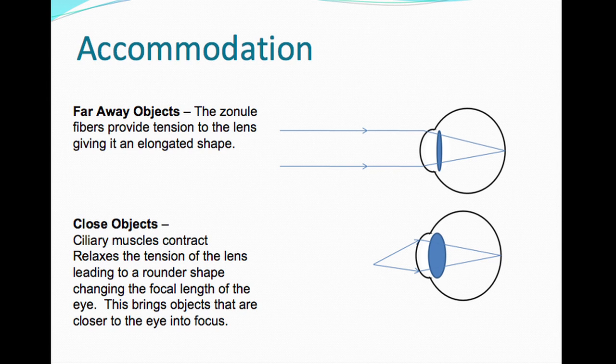Surrounding the lens is something called the ciliary body. This body of muscles, when they contract, causes the lens to get fatter, allowing you to see up close and changing the focal length of the eye. When the lens is elongated, it causes the eye to focus on things far away.